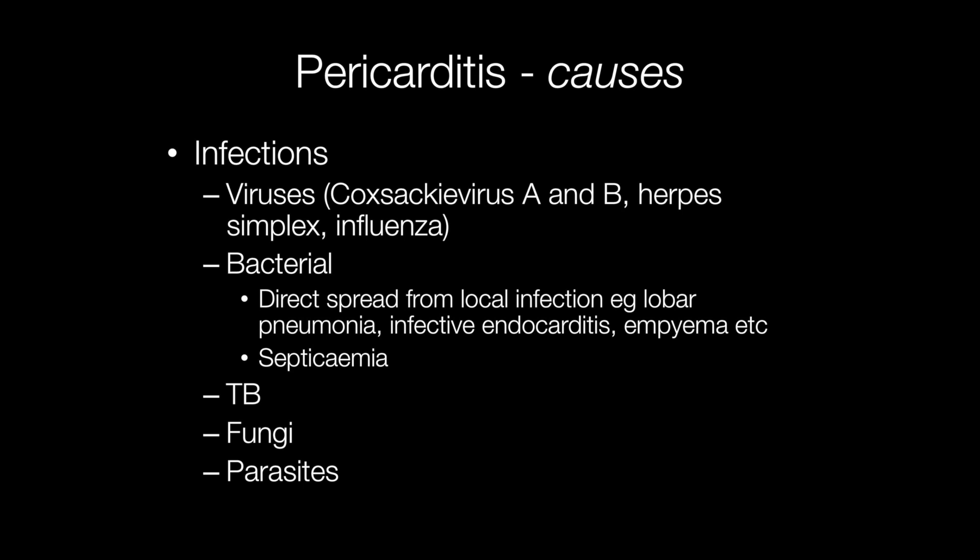Bacterial pericarditis may be caused by direct spread from a focus of infection, for example lobar pneumonia, infective endocarditis, or empyema. TB, fungi, and parasites may also cause pericarditis.